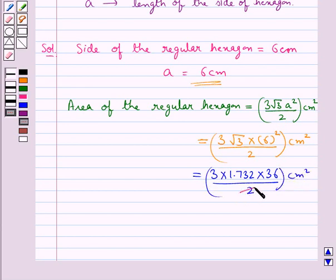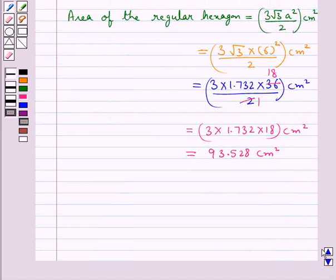Now 2 times 18 is 36. So this is equal to 3 into 1.732 into 18 cm square. This comes out to be equal to 93.528 cm square, the area of the regular hexagon with side 6 cm.